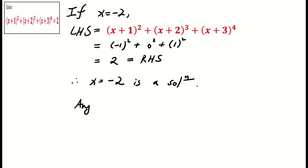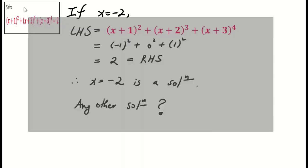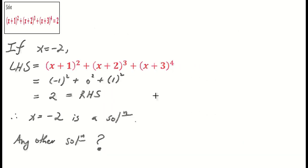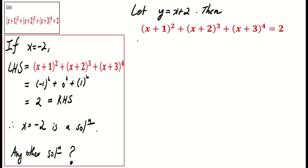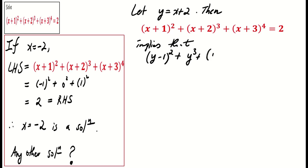While x equals negative 2 is an obvious solution, could there be others? Knowing that x equals negative 2 is a possible solution, we can let y equal x plus 2. The original equation then transforms into (y−1)² + y³ + (y+1)⁴ = 2.